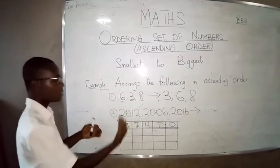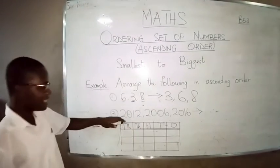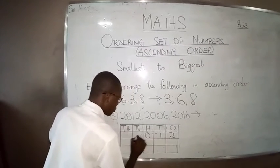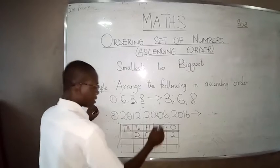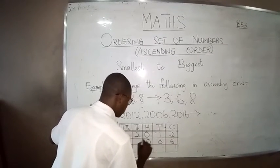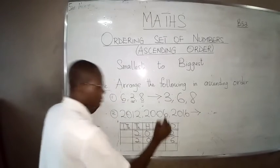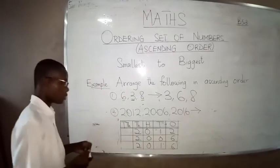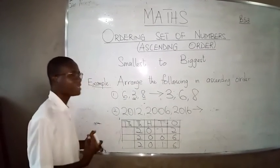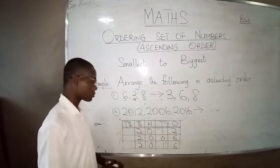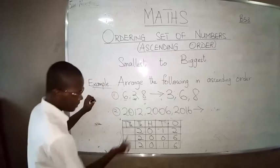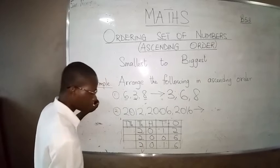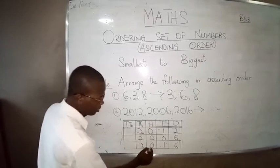Let's write in the first number, 2012: two, zero, one, two. Then the next number 2006: two, zero, zero, six. Then the next number 2016: two, zero, one, six. When we compare the numbers, you start from the front. We notice that the first column is two, two, two — they are all the same. The next column is zero, zero, zero — they are all the same.